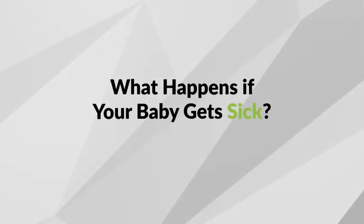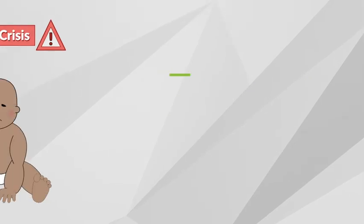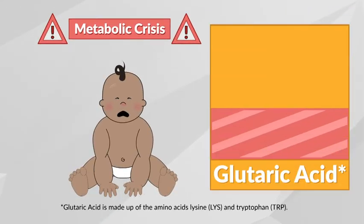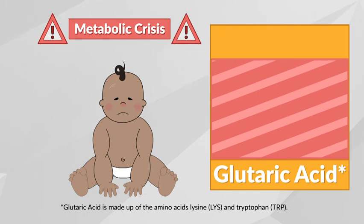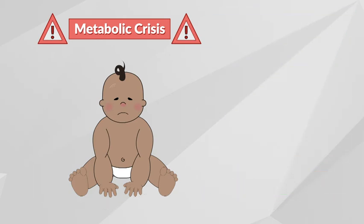What happens if your baby gets sick? For individuals with GA1, a metabolic crisis causes a buildup of glutaric acid and other substances, which can lead to irreversible, severe problems. It is important to avoid and manage a metabolic crisis quickly and properly.